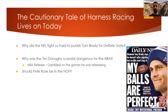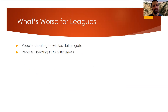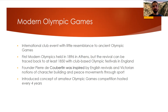Think about why the NFL fought so hard to punish Tom Brady. There was an NBA referee, Tim Donaghy, who fixed games so he could win bets — the referee gambled. And Pete Rose, who is not in the Hall of Fame. So why do leagues crack down on this? What's worse for leagues: people cheating to win, or people cheating to fix outcomes? Definitely cheating to fix outcomes, although both are bad. The Black Sox scandal had a pitcher cheating to lose, which was very bad for Major League Baseball.